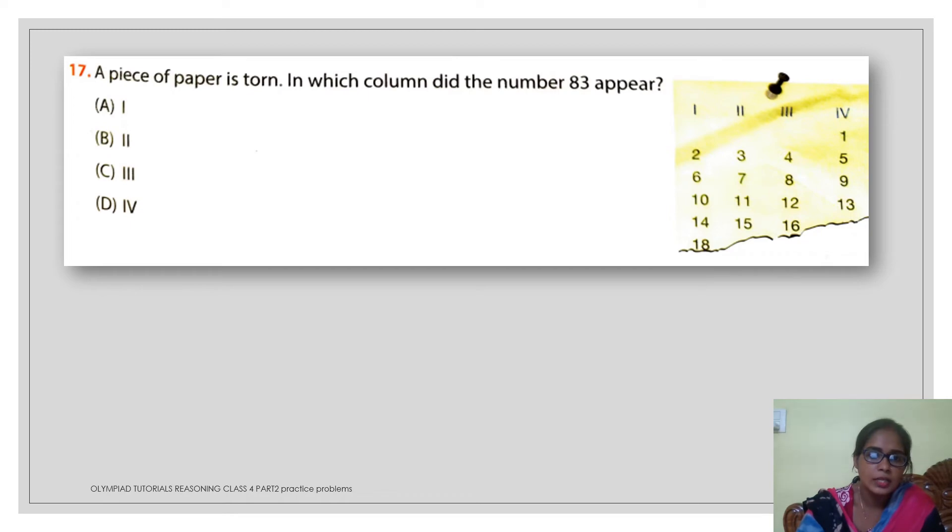In this question, you can see a piece of paper is torn. In which column did the number 83 appear? Here you can see a piece of paper. Four columns are there. And starting from column number 4, the numbering is starting from 1. Just by simple observation and few calculation, we can find out in which column the number 83 is going to appear.